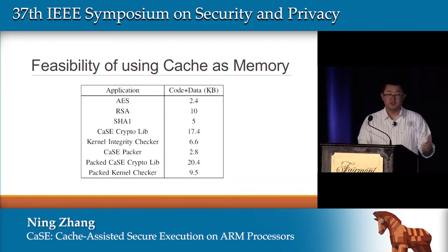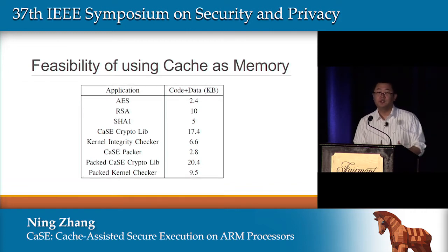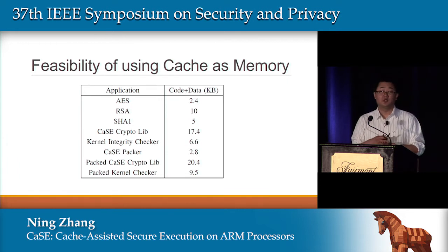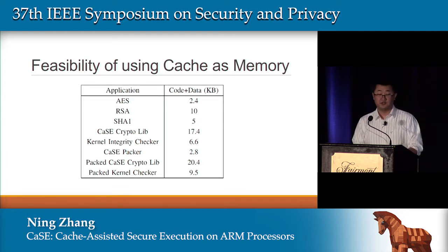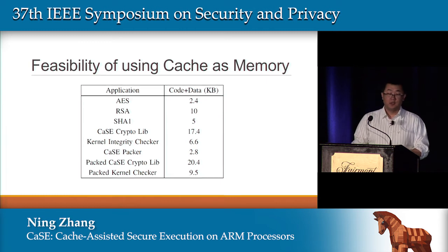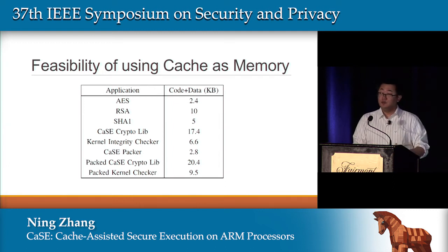Now for evaluation. One question I asked myself: if I put everything in cache, what type of application can I fit in that tiny cache? We implemented two applications using our framework: a kernel integrity check and a suite of cryptographic functions. The crypto suite includes RSA, SHA-1, and AES, totaling 20.4 KB. We compile using Thumb code to make it smaller, and we can fit the entire crypto library in just one cache way.